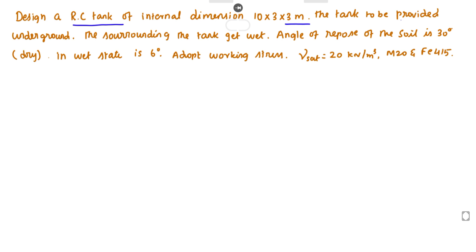The tank is to be provided underground. The surrounding of the tank gets wet. The angle of internal friction is 30 degrees for dry soil, and if the soil is in wet state, the angle of internal friction is 6 degrees. The saturated unit weight of soil is 20 kN per meter cube.